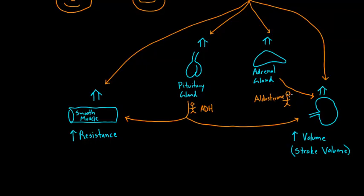You've got aldosterone and ADH that are also acting on some of the same cells. I should rephrase that—not exactly the same cells, but the same organs as the angiotensin 2. Aldosterone is going to act on kidney cells to increase volume. ADH is going to act on, as I said before, the kidney and smooth muscle.